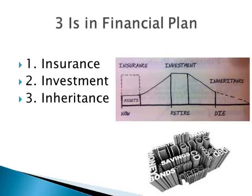The second thing — and it's the biggest one — is called investment. Investment actually allows us to accumulate funds for our retirement. A lot of us do investment either in property, FD, or shares. Finally, we have inheritance planning, which is to provide the management and distribution of one's assets after death, usually through wills and trusts.